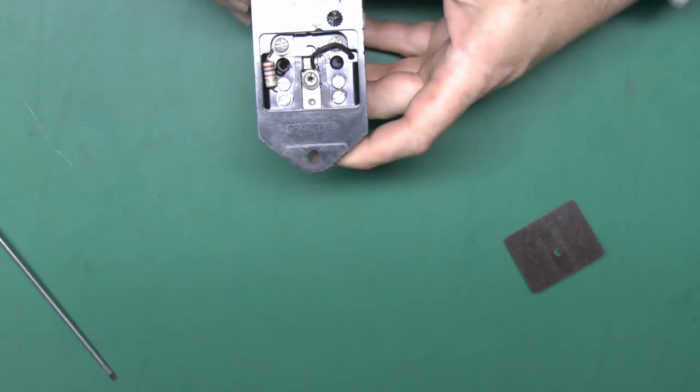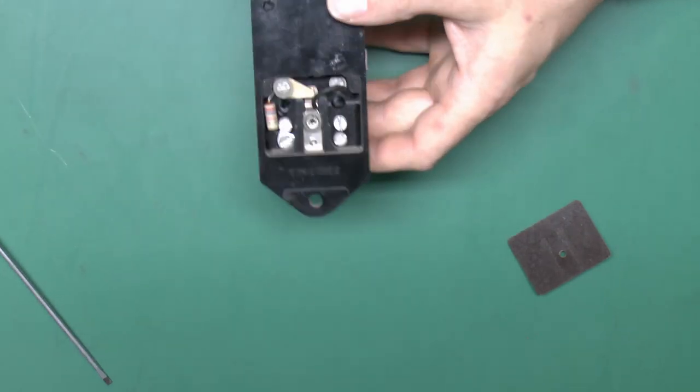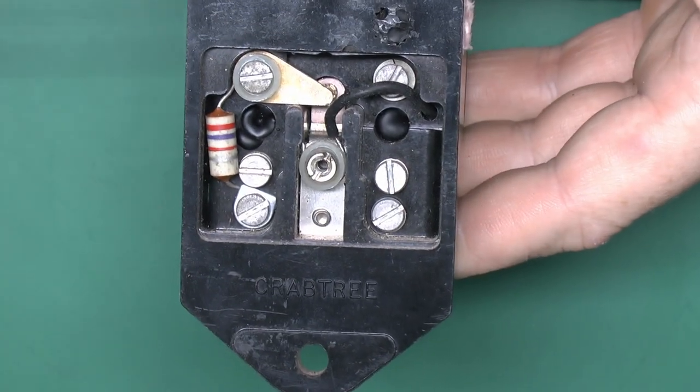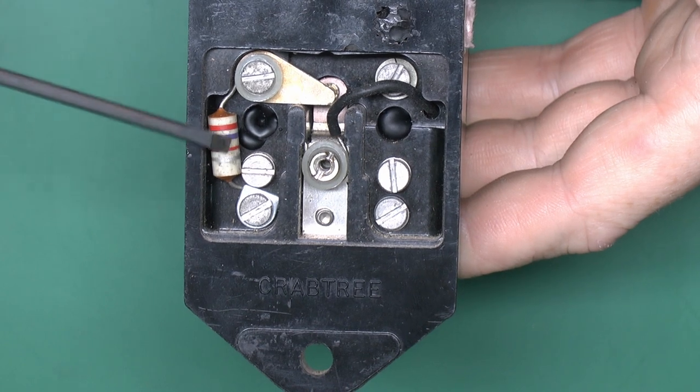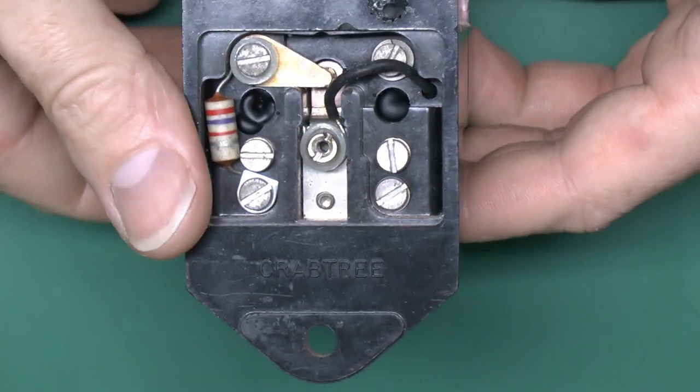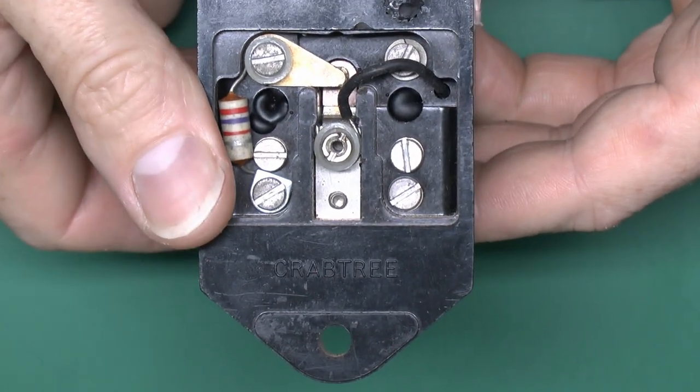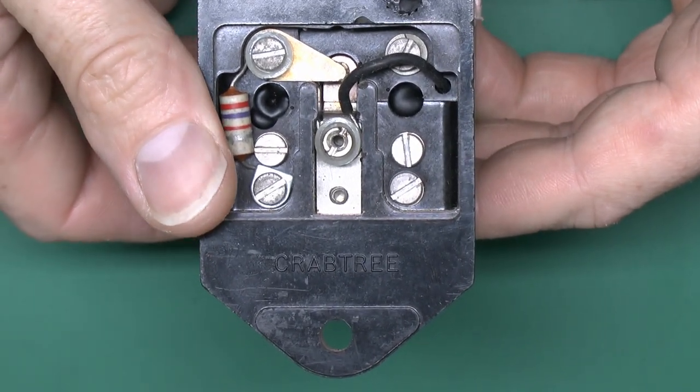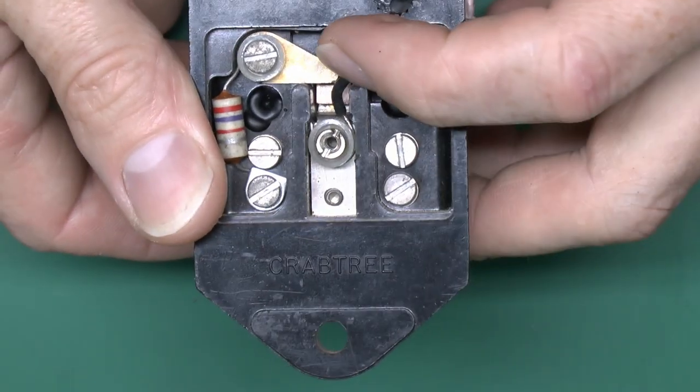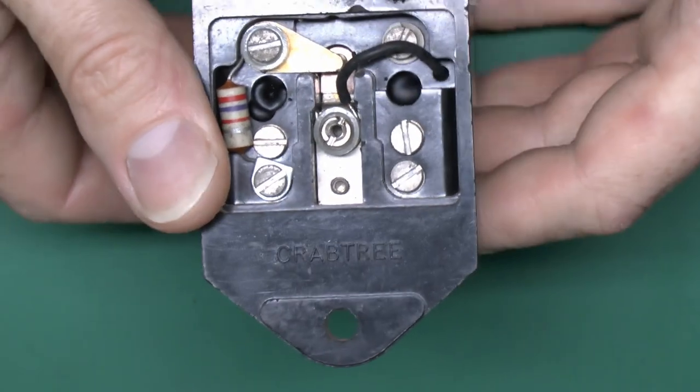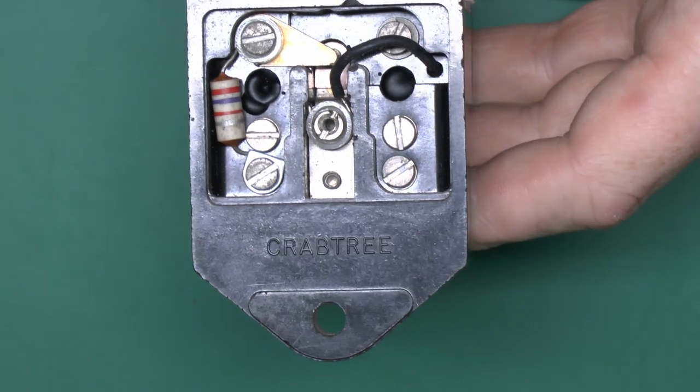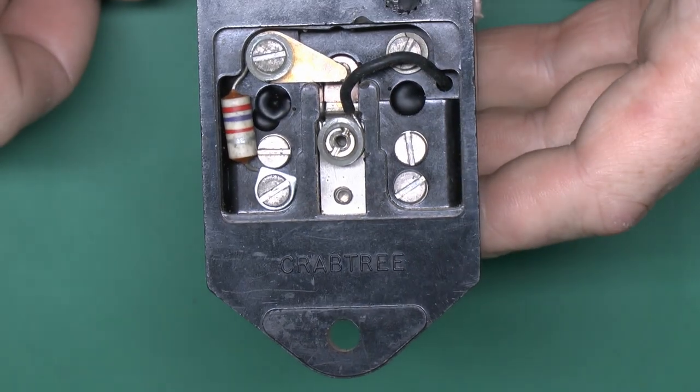Right, okay, so in here we've got the test resistor, which will obviously connect via the test switch. If we press the test button, we can see that part just moving in the bottom there, disconnecting at the bottom, and then reconnecting onto this top terminal, which goes via the test resistor and puts the line voltage across the coil, therefore hopefully tripping the device out.